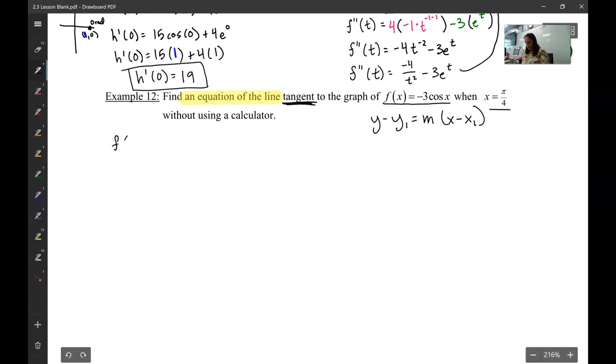That we're talking about something like this. That is an equation for a line. So here I need a slope and I need a point. But notice here I have an equation and an x value. So the first thing that I'm going to do is plug my x value in to my equation.